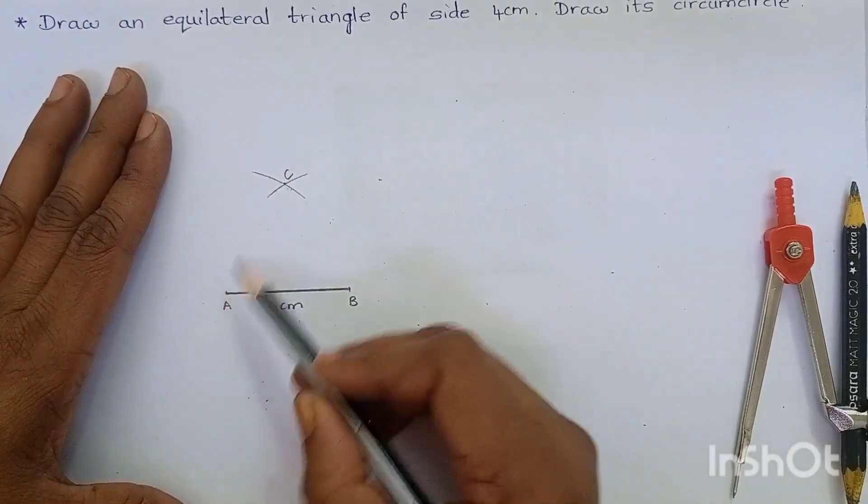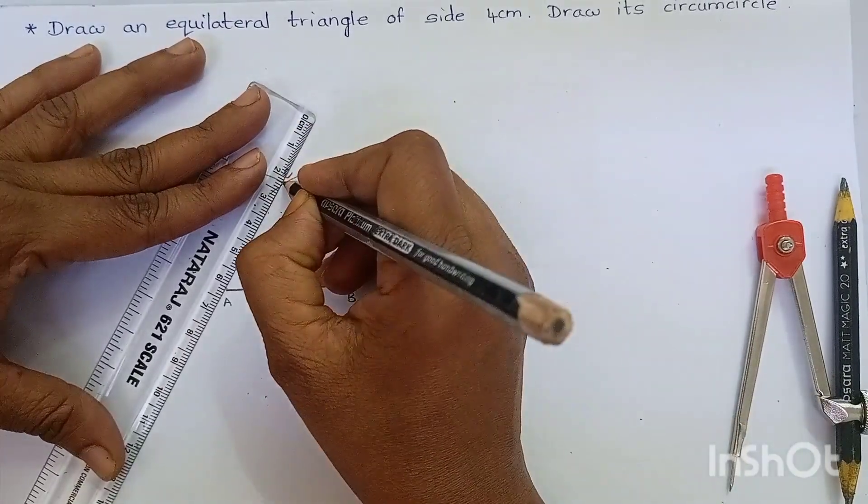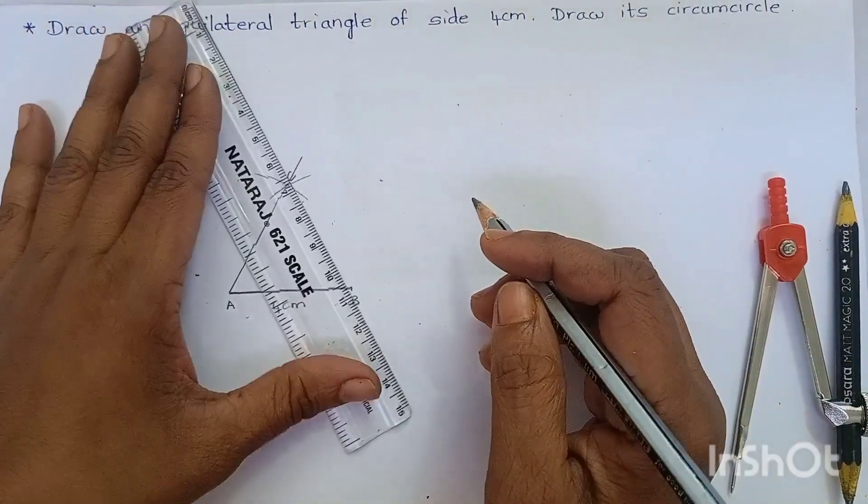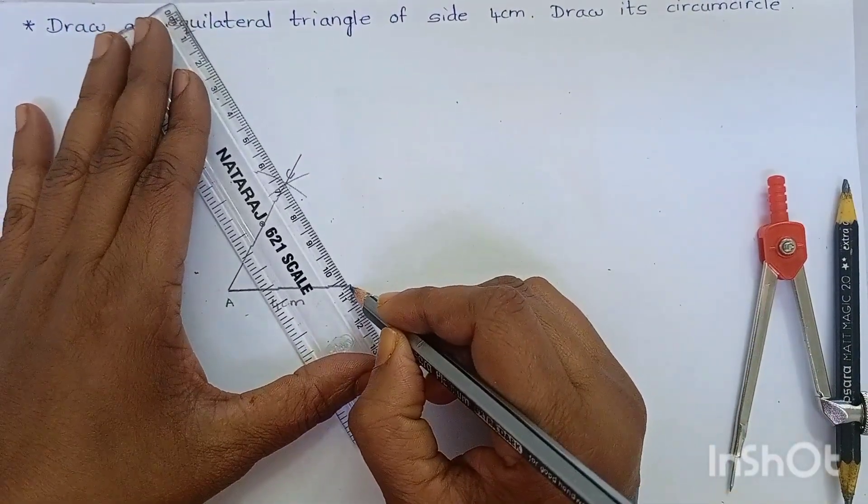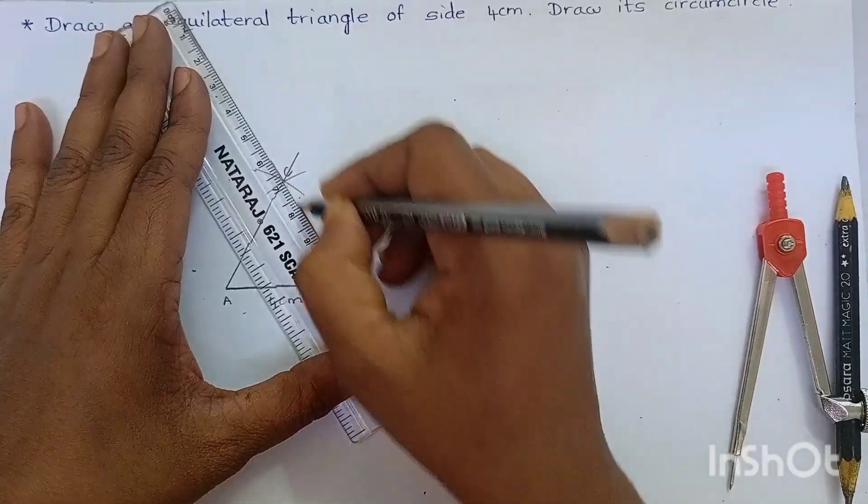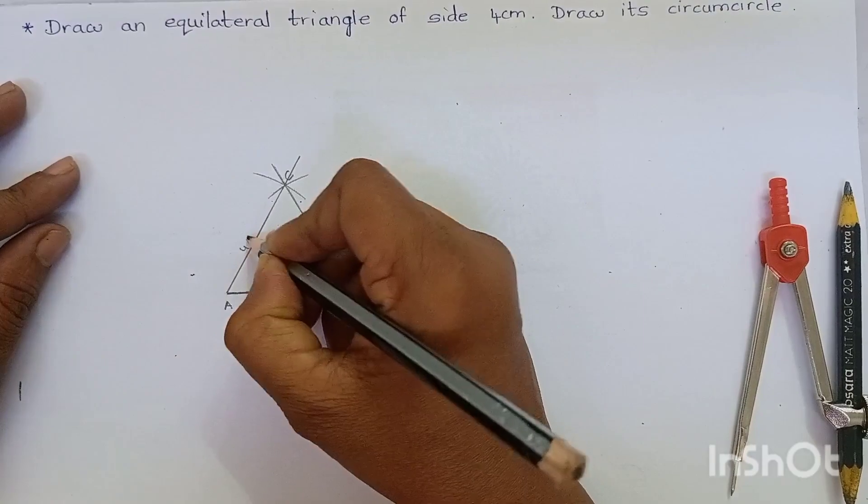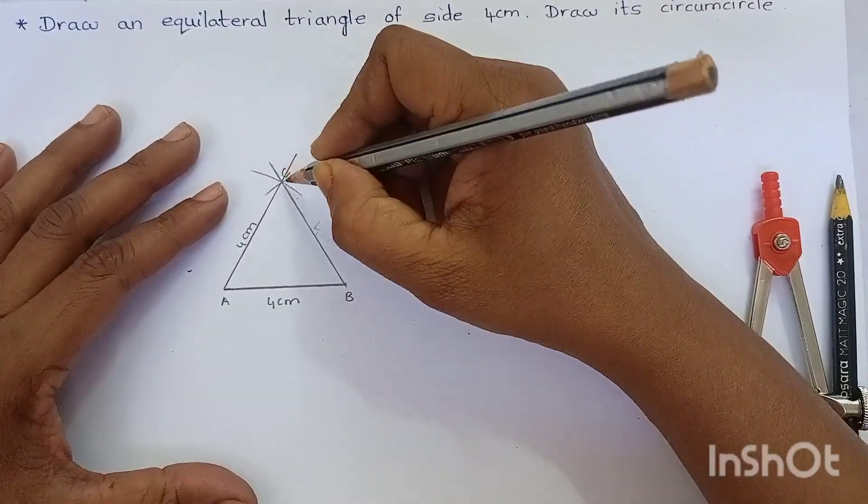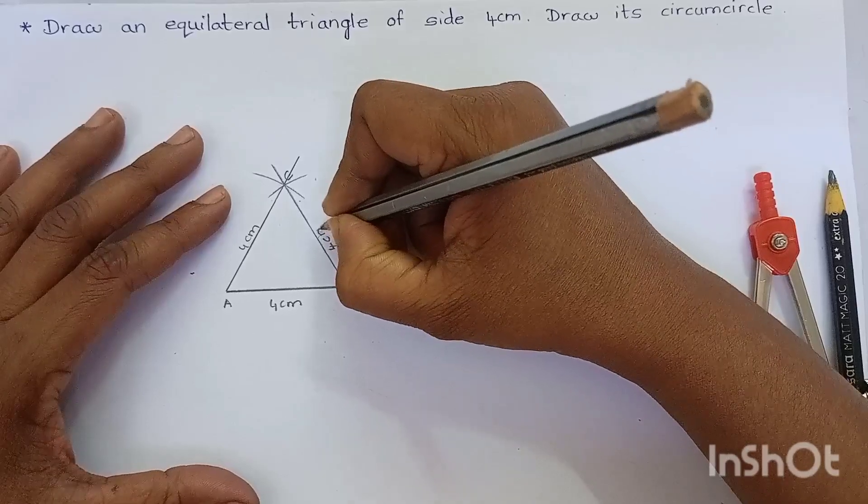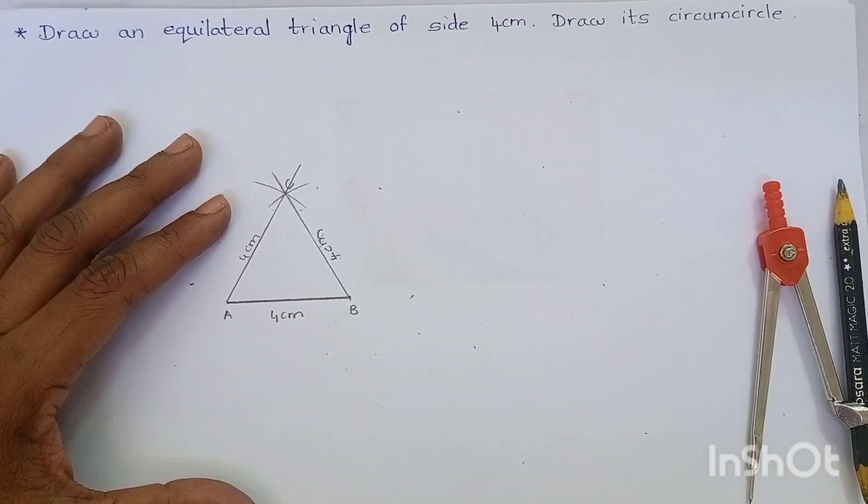Now, join AC and BC. AC is 4 cm. BC is 4 cm. We have drawn an equilateral triangle.